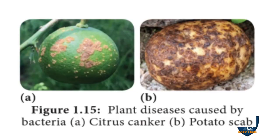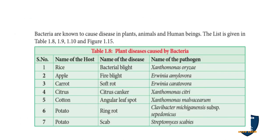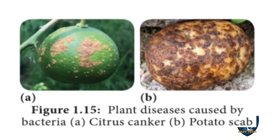This is the citrus fruit — you can see this lemon fruit infected with the bacteria Xanthomonas citri. And this is potato scab — you can see the scabs around it. The citrus canker shows yellow spot-like structures on the fruit. That is called citrus canker, caused by Xanthomonas citri. You can also see the scab on the potato — that is called potato scab disease.